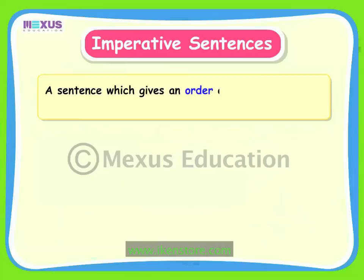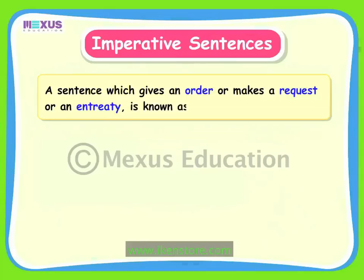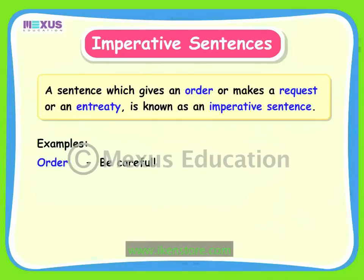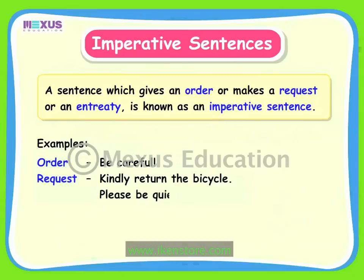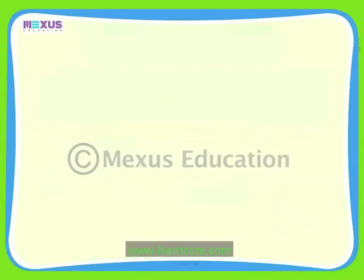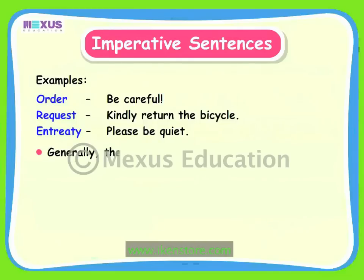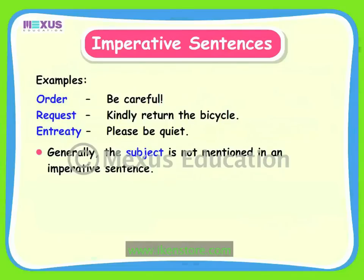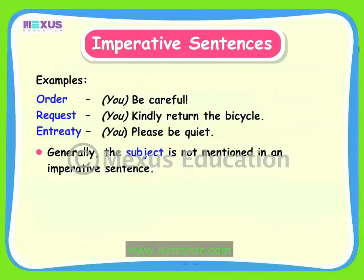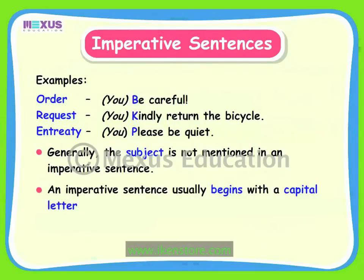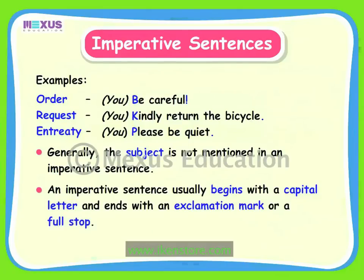A sentence which gives an order or makes a request or an entreaty — which is an urgent request — is known as an imperative sentence. For example, Be careful is an order; Kindly return the bicycle is a request; Please be quiet is an entreaty. Generally, the subject is not mentioned in an imperative sentence. In these examples, the subject you is understood. An imperative sentence usually begins with a capital letter and ends with an exclamation mark or a full stop.